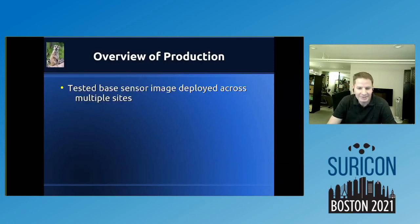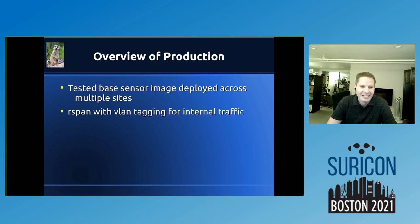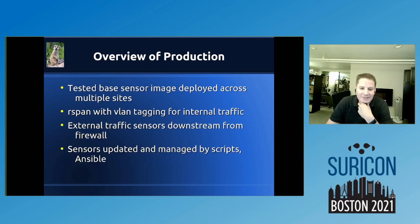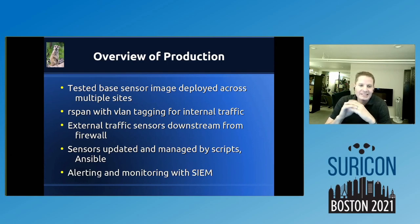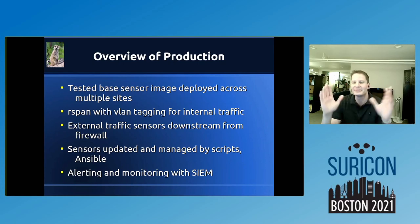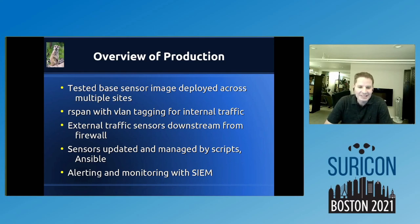A quick overview of production: my ideal environment is a tested base sensor image deployed across multiple sites, with R-SPAN with VLAN tagging for internal traffic, external sensors downstream from the firewall, sensors updated and managed by scripts and Ansible, and alerting and monitoring with the SIEM. R-SPAN has worked well for me in a virtual environment. When you're deploying, think about what your end goal is — what will it look like when you go to production?